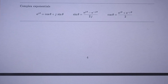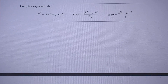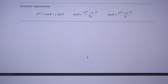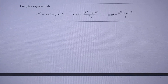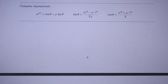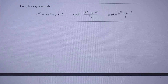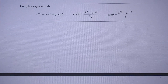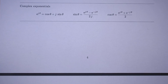Euler's equation is for me the most spectacular equation of all of math, because it means that e to the power j times pi — e to the power j pi — is minus 1. Isn't that wonderful? E to the power j pi is minus 1.